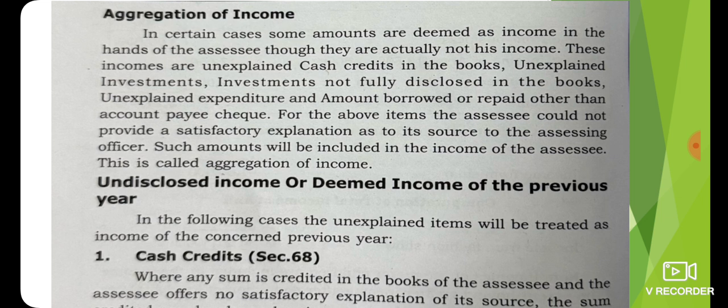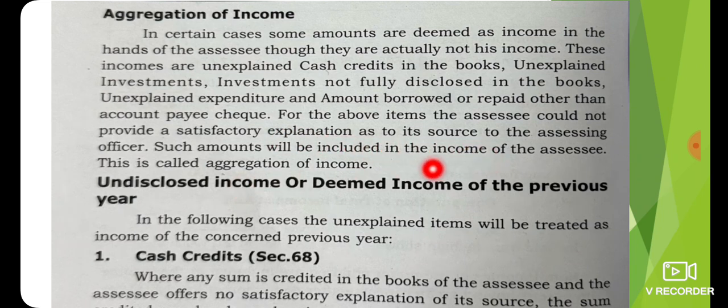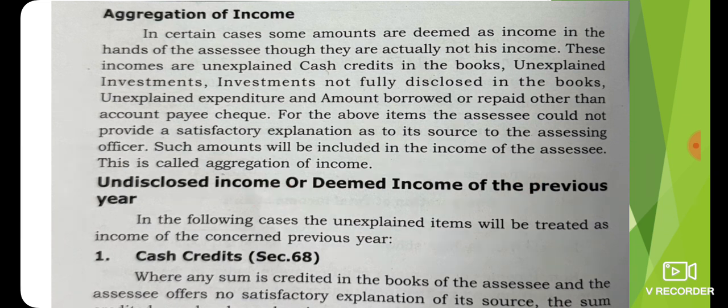What is aggregation of income? For the above items, the assessee could not provide a satisfactory explanation. Such amounts will be included in the income of the assessee and charged to tax. This is called aggregation of income.